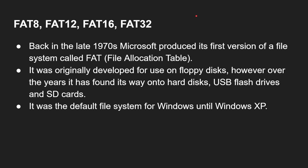Let's start with FAT — in fact, let's start with FAT8. FAT8, FAT12, FAT16, and FAT32. Back in the late 70s, Microsoft produced its first version of a file system called FAT — File Allocation Table. It was originally developed for use with floppy disks. However, over the years it found its way onto hard drives, USB flash drives, and SD cards.